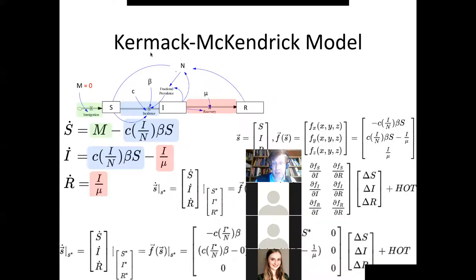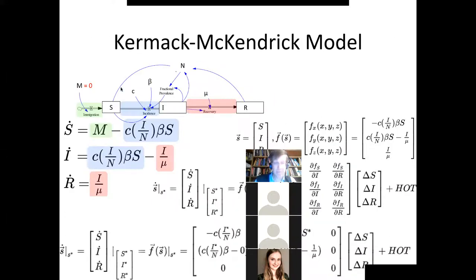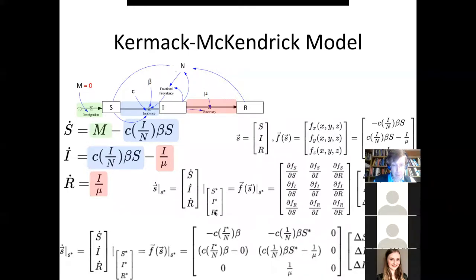The first component is M minus this; the second one is just this — that's what this function is, the function of state telling us how much I-dot changes as a function of state: it's C times I over N times beta times S minus I over mu. And this one tells us how the rate of change of R depends on system state: it's I over mu.